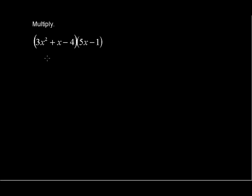The key to multiplying polynomials is to multiply every term in one polynomial by every term in the next polynomial.